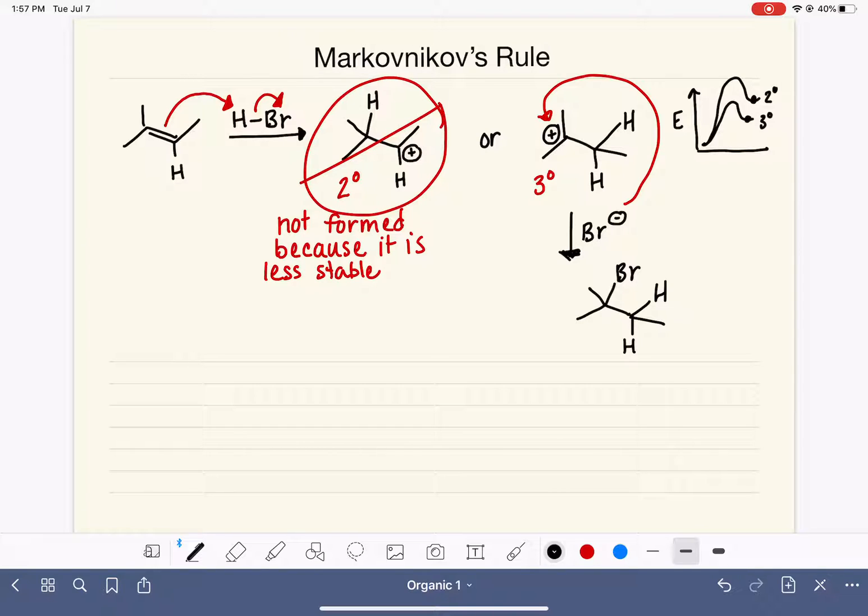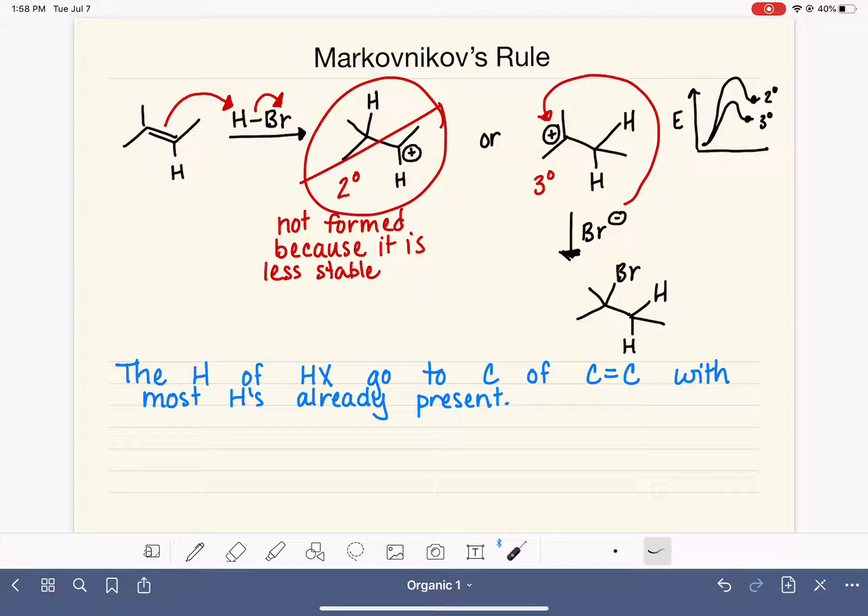What we just observed is called Markovnikov's rule. And in words rather than in diagrams, we can summarize Markovnikov's rule by saying that the hydrogen of HX will go to the carbon of the carbon-carbon double bond with the most hydrogens that are already present. Now, I know that sounds really confusing. It's just one of those things that sounds very confusing. But when we look back at this example here and break this down, you'll see that it's actually not as confusing as it looks.